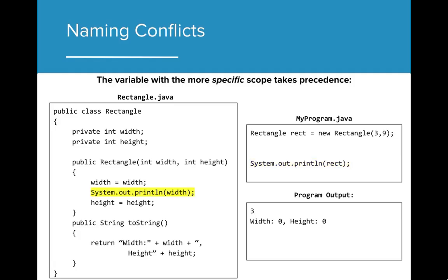This is best illustrated by adding a println statement in the constructor. As we can see, the value of width when printed in the constructor is the correct value that is input into the constructor, 3. The reason that the instance variables do not take the value of 3 is because the assignment width equals width in the constructor is using the formal parameter width instead of the instance variable width.